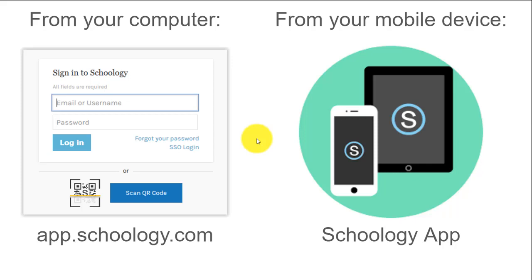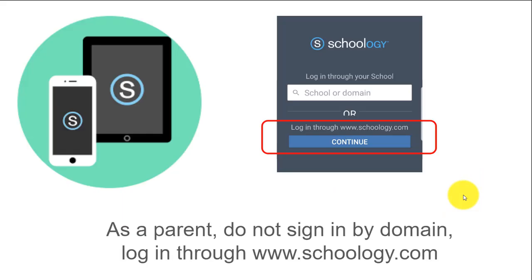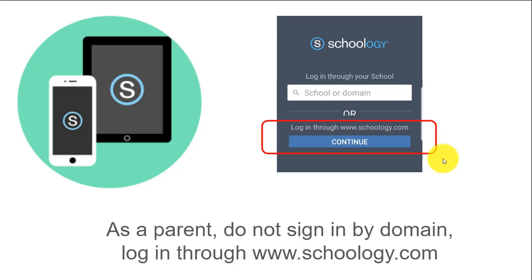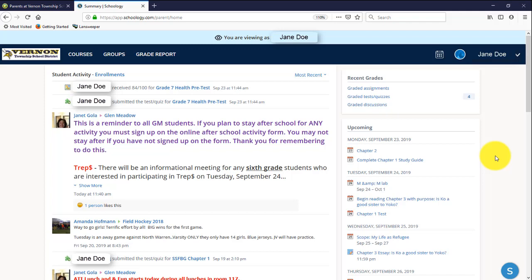Schoology also has an app available on both the iTunes and Android stores, so you can see information on the go. Many students use it too — if they don't have their Chromebook with them, they still have access to their digital content. A word of caution for parents using the Schoology app: make sure when you log in on your mobile device that you are logging in through www.schoology.com. Our students use the vtsd.com domain — you as a parent do not have that. You'll use your personal email on record, so be sure to select the bottom option: 'Login through Schoology.com.'